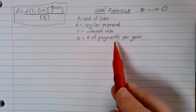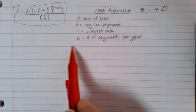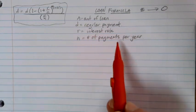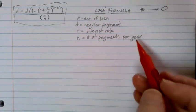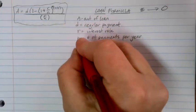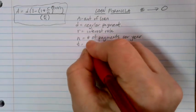Almost always we're doing monthly payments. That's just kind of the norm, but do read the problem to see if there's something a little bit different in play there. T, of course, is going to be our time in years.